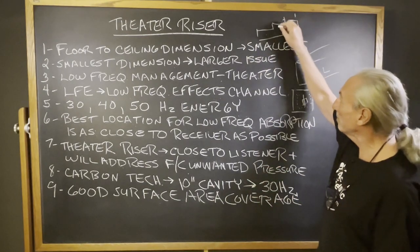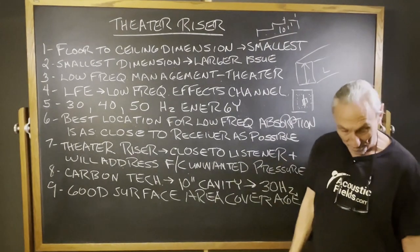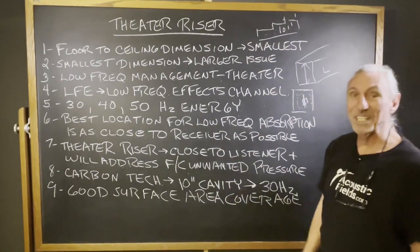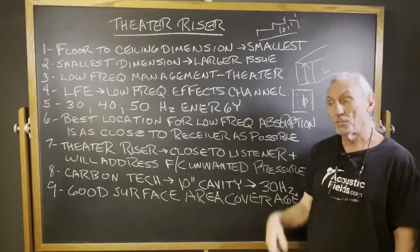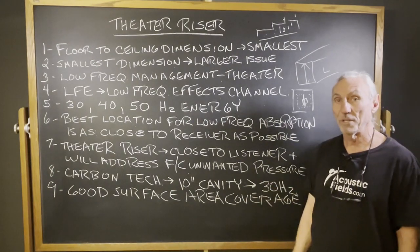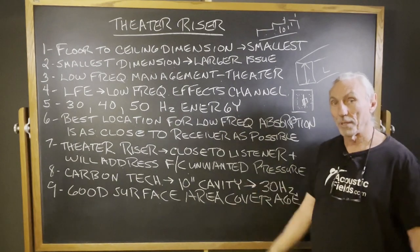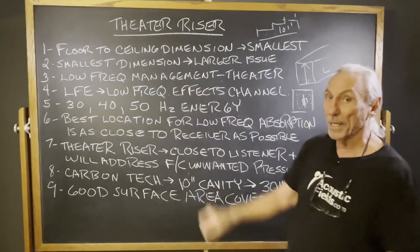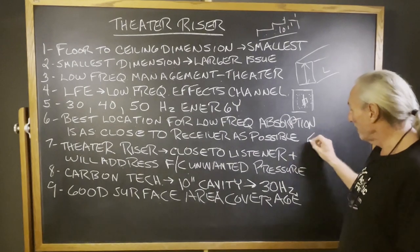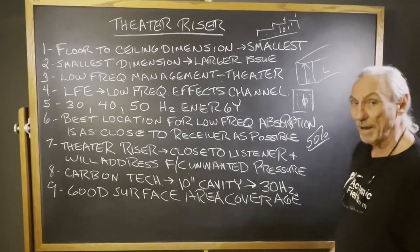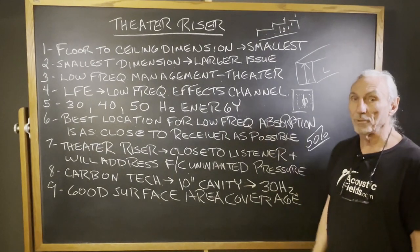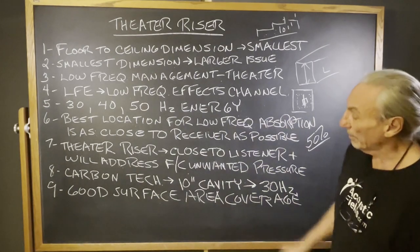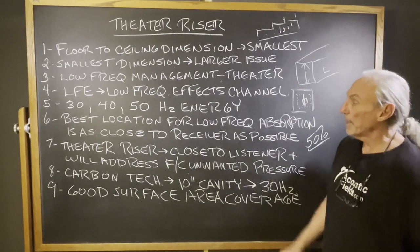Our carbon technology will fit in the riser because we only need 10 inches of space — and 10 inches happens to be the height of most risers we work with. So we can install our carbon technology right into the riser itself; you'll never even see it, just like our CAW system installed in the walls. No big refrigerator-style boxes sitting around. It's all about square footage when it comes to low frequency management — usually around 50% wall coverage on average. Eight-foot ceilings require four or five foot units, which is why our units are 60 inches high. It's all about surface area coverage and having the right rate and level of absorption.